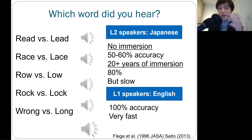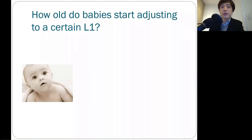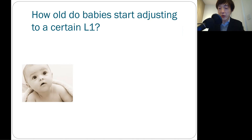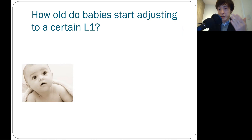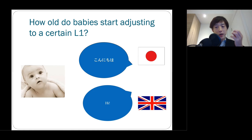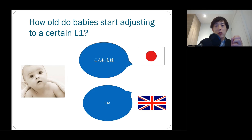Having said that, I would like to revisit this question once again. How old do babies start adjusting to a certain L1 and then become a native speaker of one particular language? For this question, I would like to restrict our discussion to just the monolingual family — where your parents are speaking the exact same language, whether Italian, Chinese, Japanese, or English. Before the end of the critical period, you're able to perceive and identify any sound contrast in any possible languages on this planet. But after the end of the critical period, you're able to perceive sound contrast only within your first language phonetic inventory. My question is again: how old do babies start being fine-tuned and zooming in on one particular language?